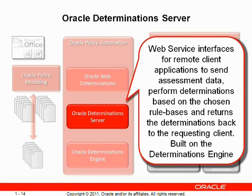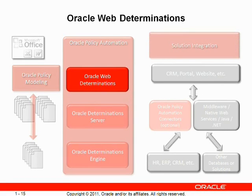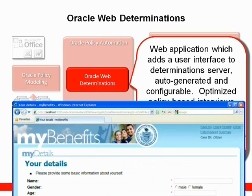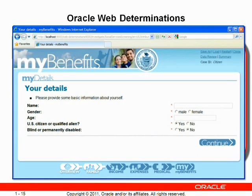Oracle Determinations Server leverages the core Determinations Engine. The last of the three execution alternatives is Oracle Web Determinations, which provides a web application adding a user interface to Determinations Server. The user interface can range from auto-generated to highly configurable and customized. It provides optimized policy-based interview flows and screens for collecting data, rendering determinations, and natural language decision audits.